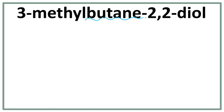This is where the alcohol groups are attached. Butane tells us that there are 4 carbons present in the longest carbon chain. This 'an' tells us that there are only single bonds present between carbons.